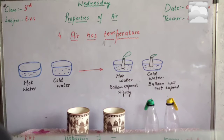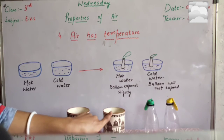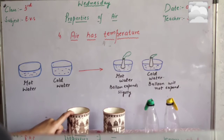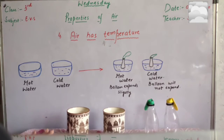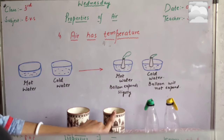Today we will complete the fourth property of air — that air has temperature. For this experiment we need two containers, two bottles, and two balloons. We have to fill the first container with hot water and the second container with cold water.